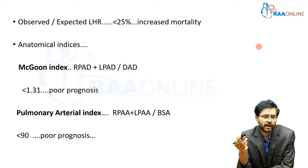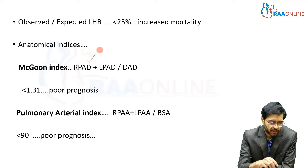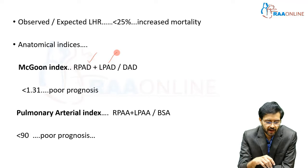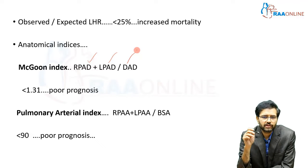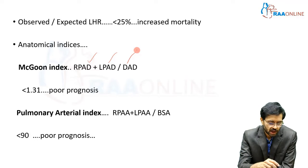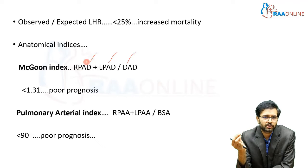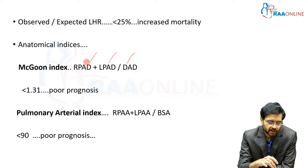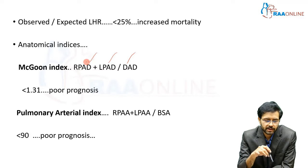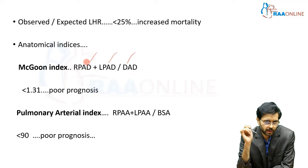There are other anatomical indices, such as the Magoon index, wherein the right pulmonary arterial diameter plus the left pulmonary arterial diameter is divided by the descending aorta diameter. If the value is less than 1.31, it carries a poor prognosis, because smaller pulmonary arterial diameters indicate possibly high pulmonary arterial pressure, meaning blood is not flowing adequately through them.